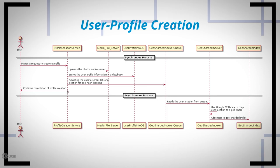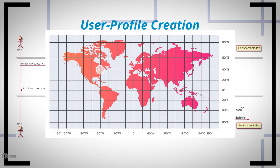Once all three operations complete successfully, a confirmation is sent back to the user. In the asynchronous process — happening in the background while the user browses the app — the location information is taken from the queue and the Google S2 library is used to map the user's location to a geo-shard, adding the user to the index associated with that shard. Since Tinder works with billions of users worldwide, data must be segmented into meaningful chunks. For example, if we have one shard for North America, all users in that region are stored there and shown recommendations only from that shard.